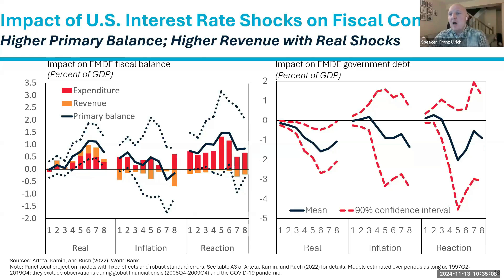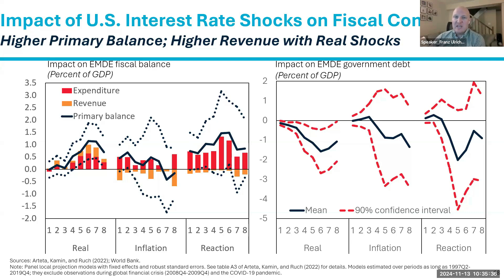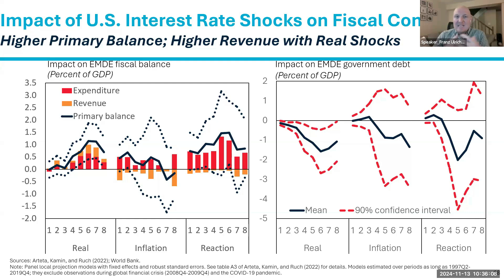On fiscal outcomes: looking at debt and fiscal balances across all shock types, debt tends to decrease — statistically significant for real shocks. This is driven by improving fiscal balances: deficits shrinking, or deficits turning to surpluses, or surpluses growing — reflecting less spending and more revenue. This improvement is most clearly visible in the real shock scenario.